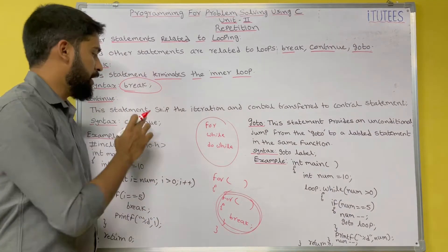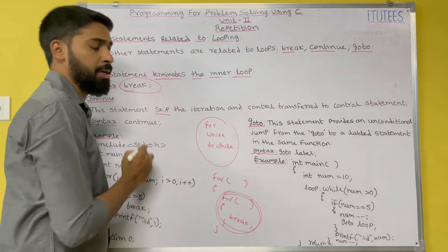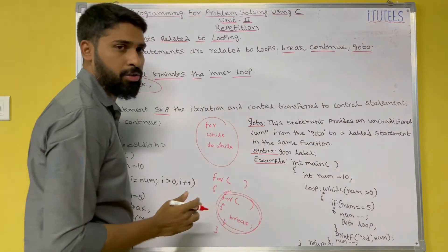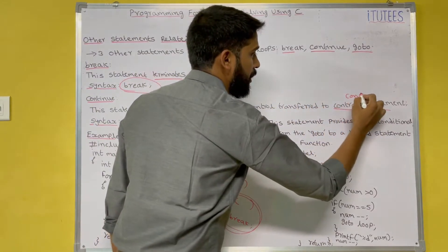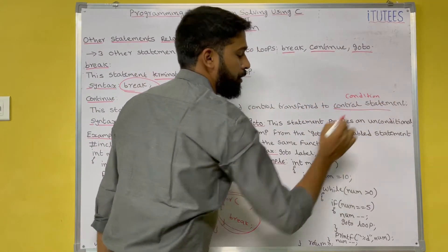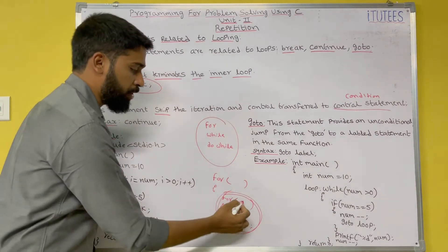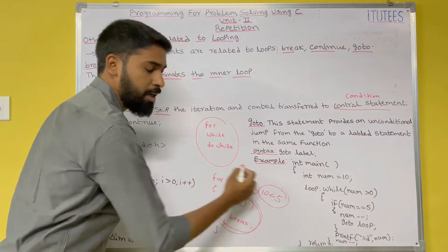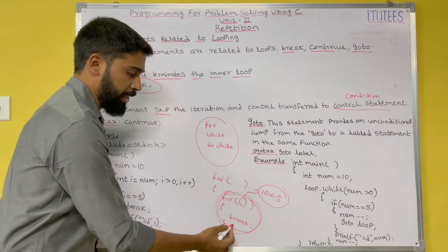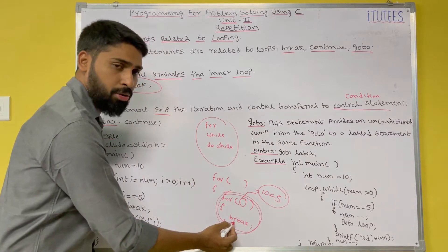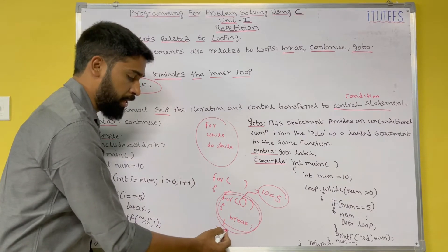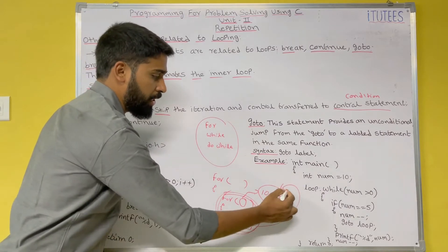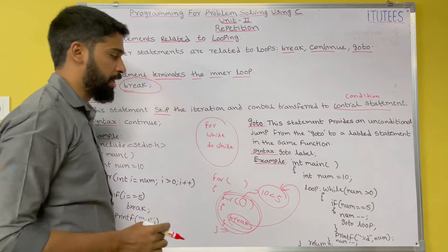Another statement is continue. This statement skips the iteration and transfers control to the condition statement. The condition is, for example, i less than 5 in a for loop. If you use break, the control goes outside the loop. But if you use continue instead of break, the control goes back to the condition. We will discuss this with an example.